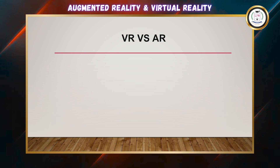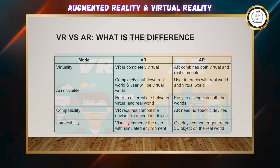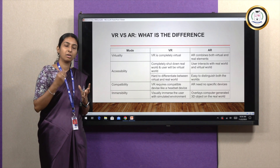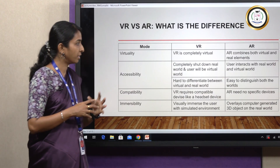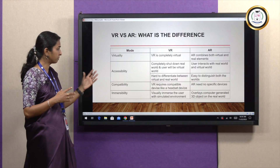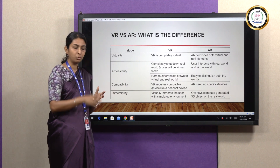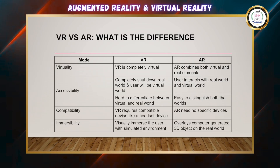Now we are in the vital part of this session: VR versus AR. What are the differences between VR and AR? In terms of virtuality, VR is completely virtual — the user is fully immersed in the virtual world — whereas AR combines both the real world and the virtual world. In terms of accessibility, VR completely shuts out the real world and places the user entirely in the virtual world, whereas in AR the user can interact with both the real world and the virtual world.